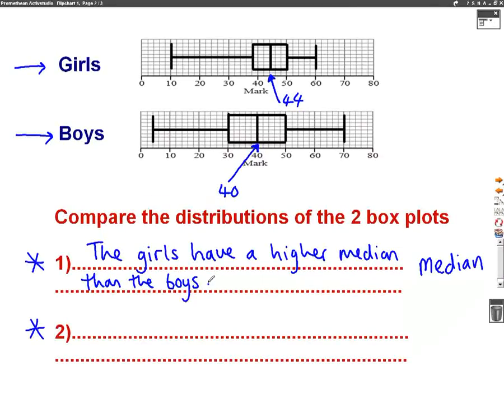The second comment will be about the range. The range is the difference between the biggest number and the smallest number. The range for the girls is between 60 and 10, and this equals 50. The range for the boys is between 70 and 4, which equals 66.